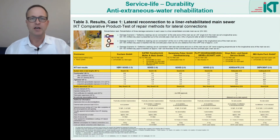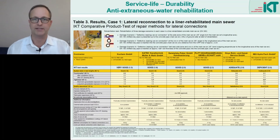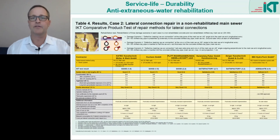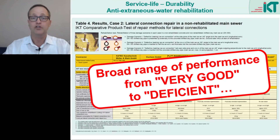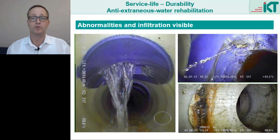Here we see the results for the quality of the injection methods in the case of reconnecting laterals as part of a liner rehabilitation — you can download this table free of charge from our website. The most important finding was that there were large differences in quality, ranging from very good to poor results. The results table for the second case — the mere repair of a single lateral connection in a non-rehabilitated main sewer — also showed substantially varying results, again with large differences ranging from very good to poor or deficient.